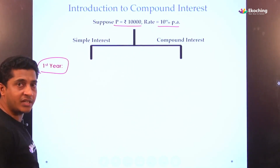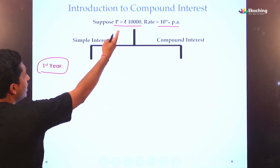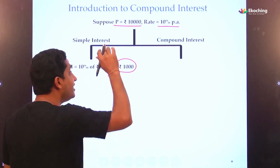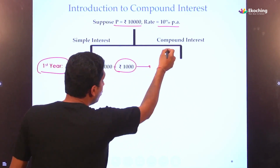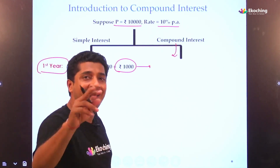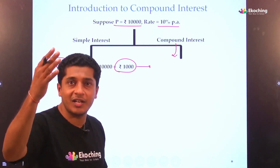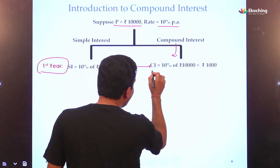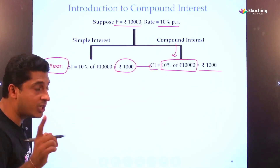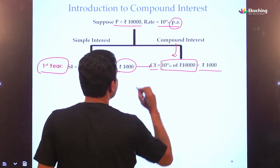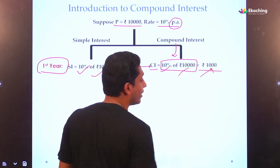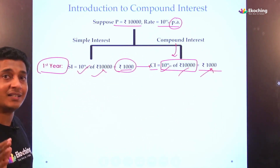10% of 10,000 is 1,000 rupees — that is my simple interest for year 1. Now, in that same year, what will compound interest be? It will also be 10% of 10,000, that is 1,000 rupees. So the first important thing to understand is: this is per annum, 10% of 10,000 is 1,000 for both. This remains the same — at least for the first year.